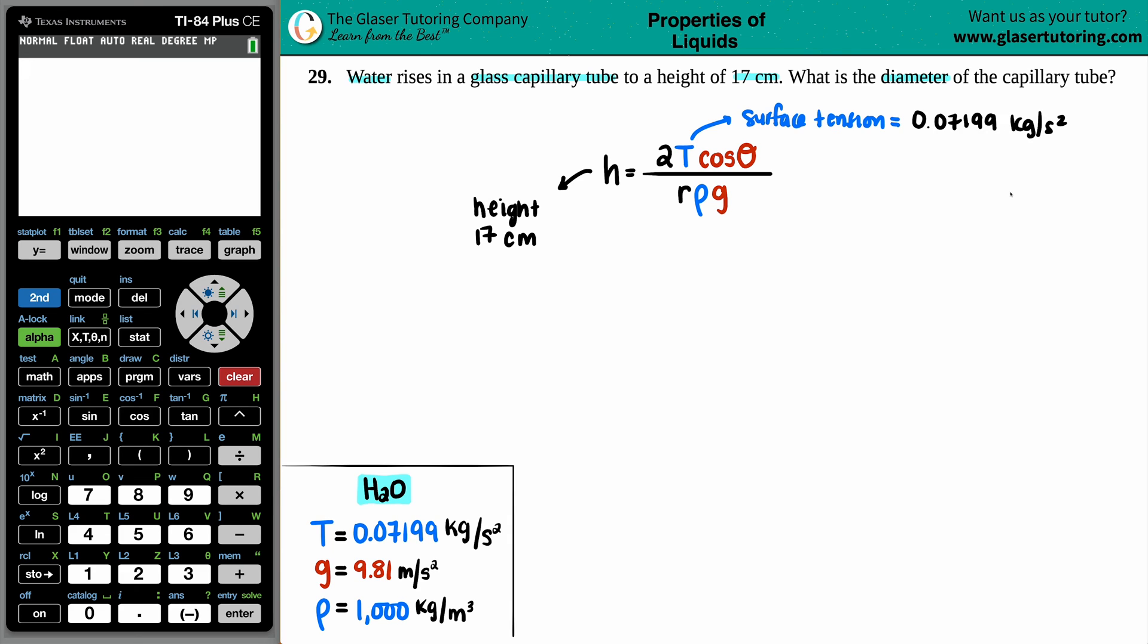And those are the standard units that you have to use for this formula here. Now comes cosine of an angle. This comes from the material of the glass of the capillary tube. In this case, it's glass. Now when you put the glass into the water, the substance basically just goes straight down, so it doesn't make an angle. So in this case, if you're talking about a glass capillary tube, the angle is zero degrees. So that was the key here.